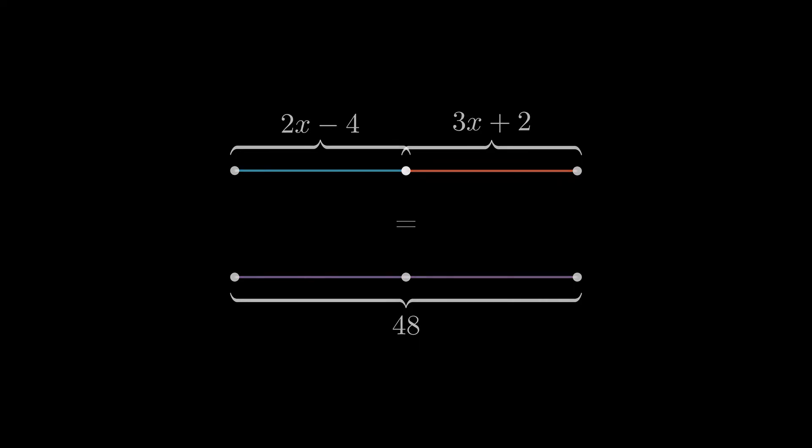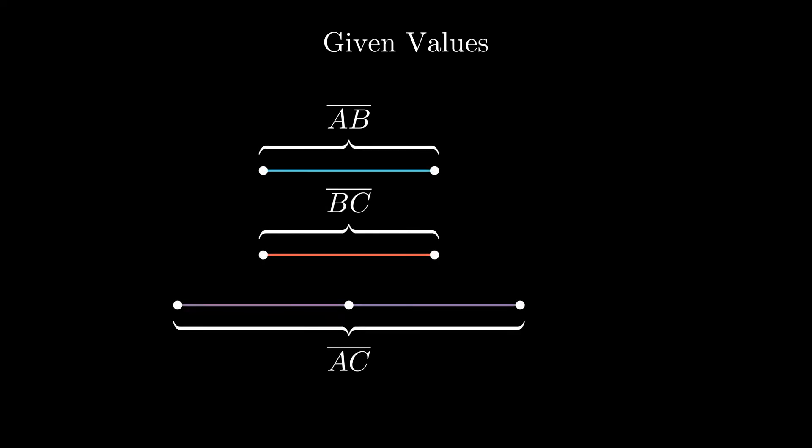Now, the question asks to find the value of x, then find the length of AB and the length of BC. To tackle this question, let's first think about what are the given values for this problem. It already tells us the total length of the line segment, and we already have the lengths of the two component line segments.